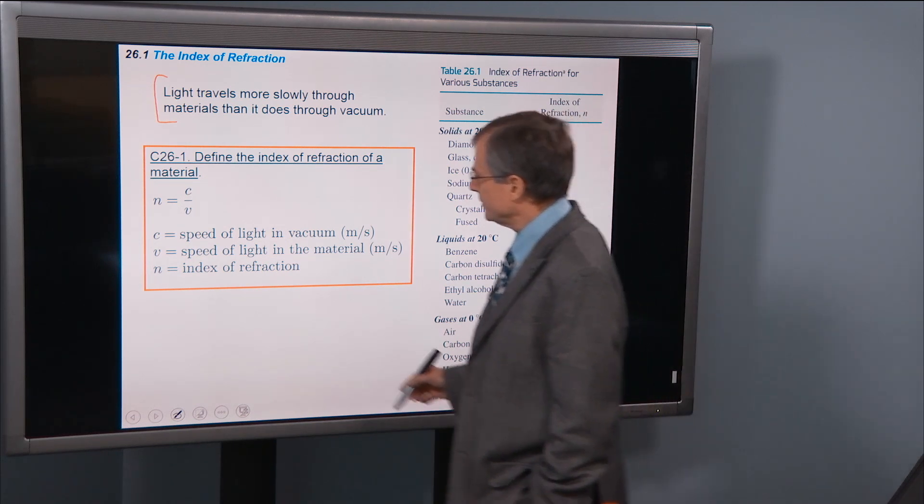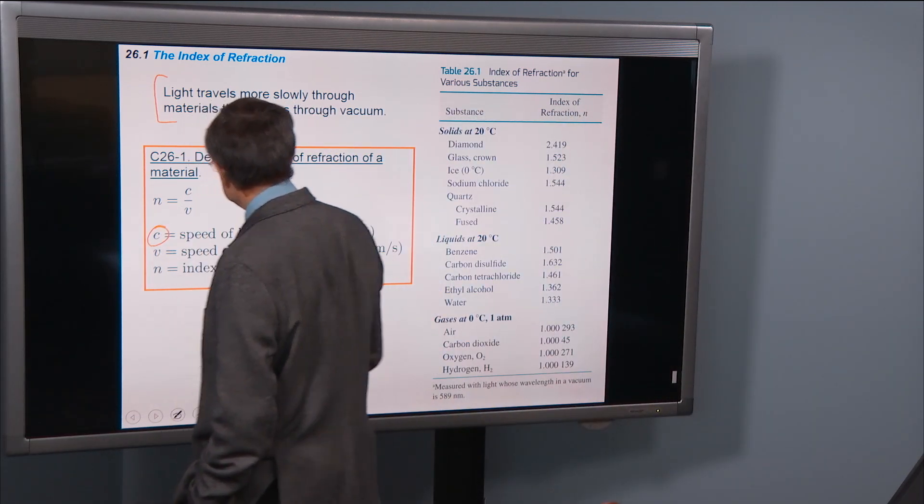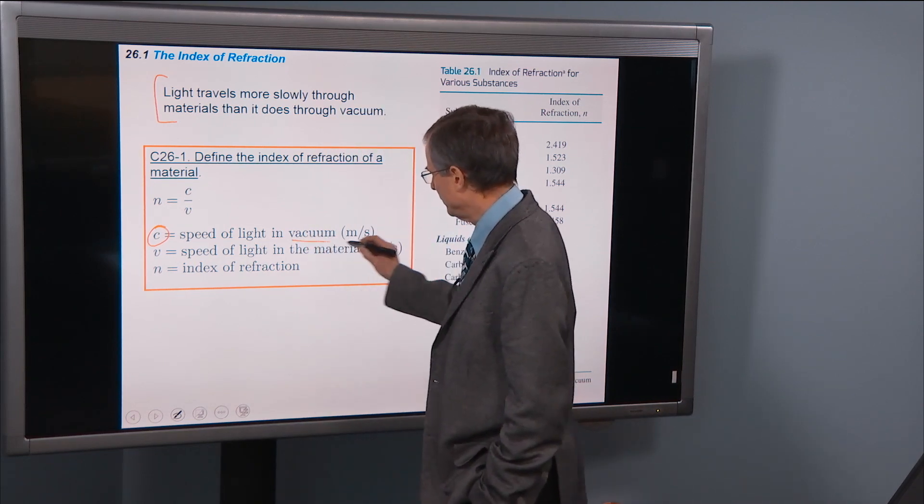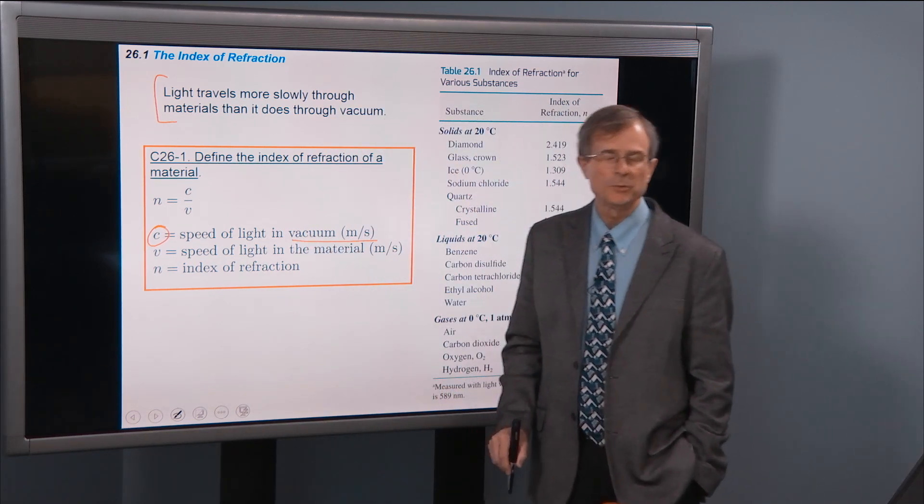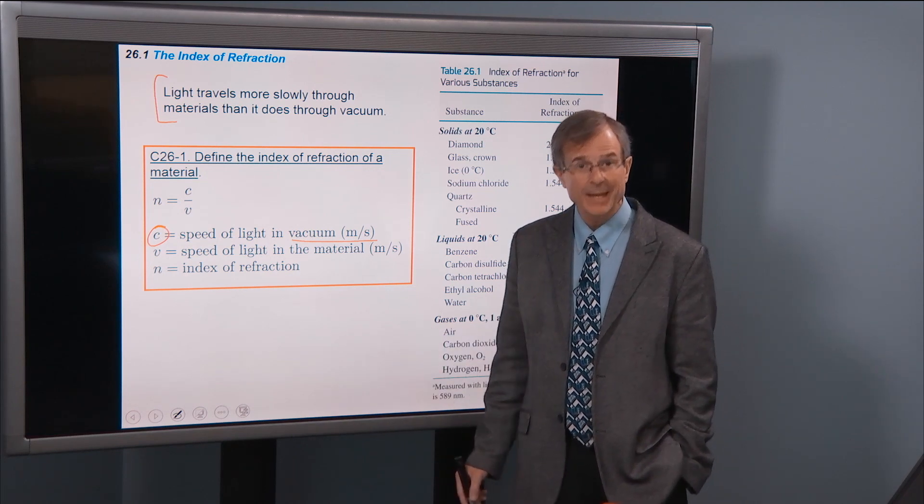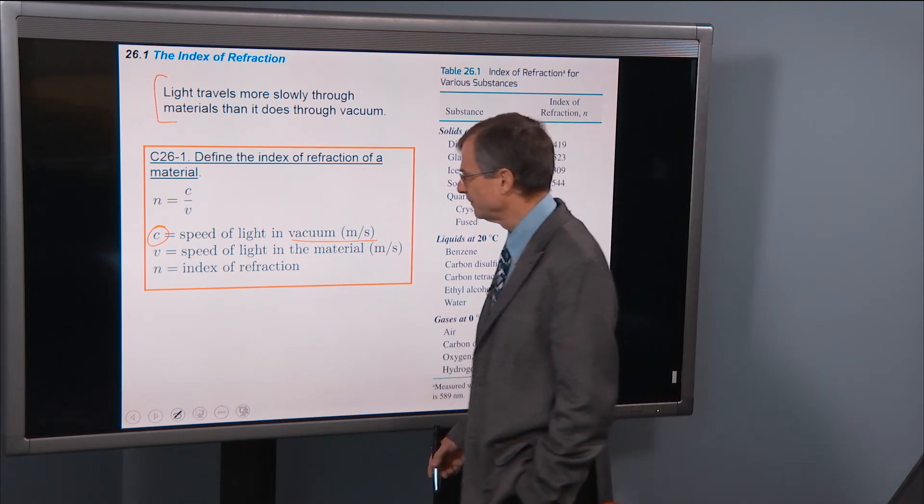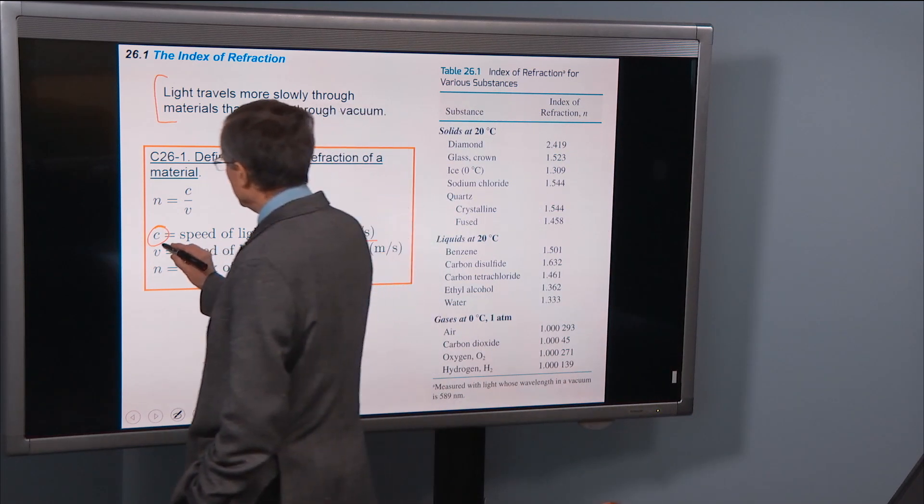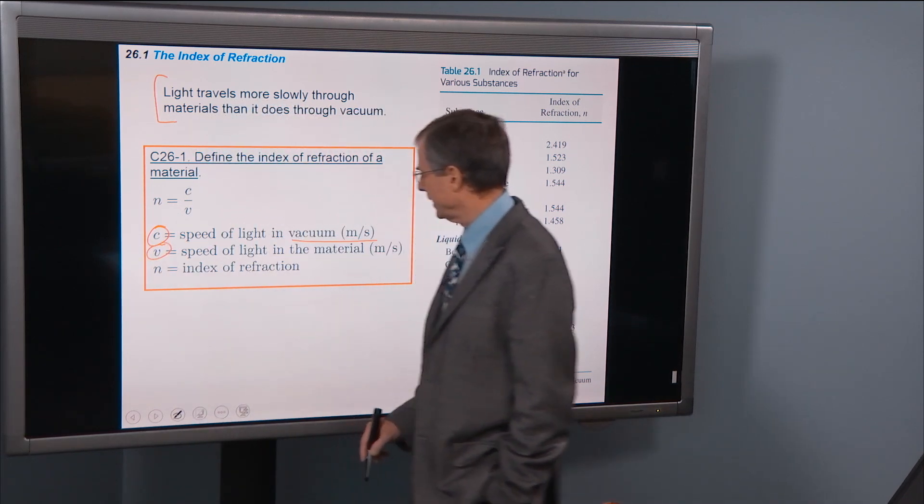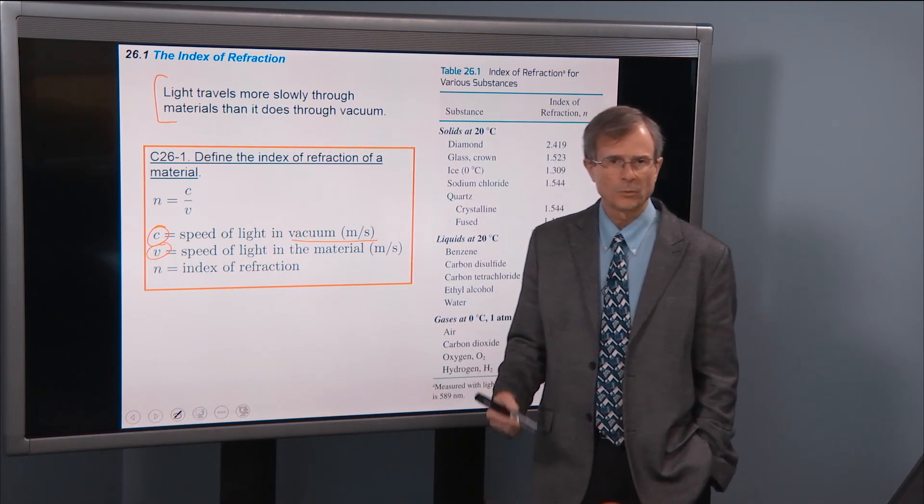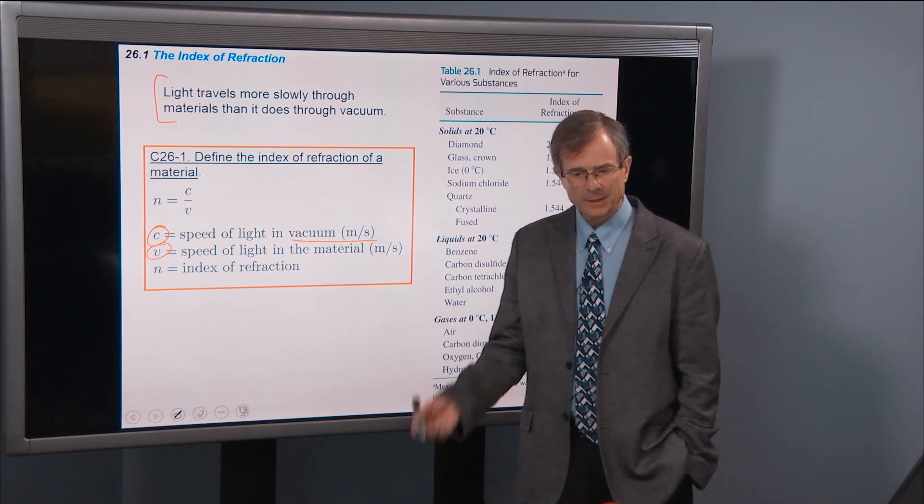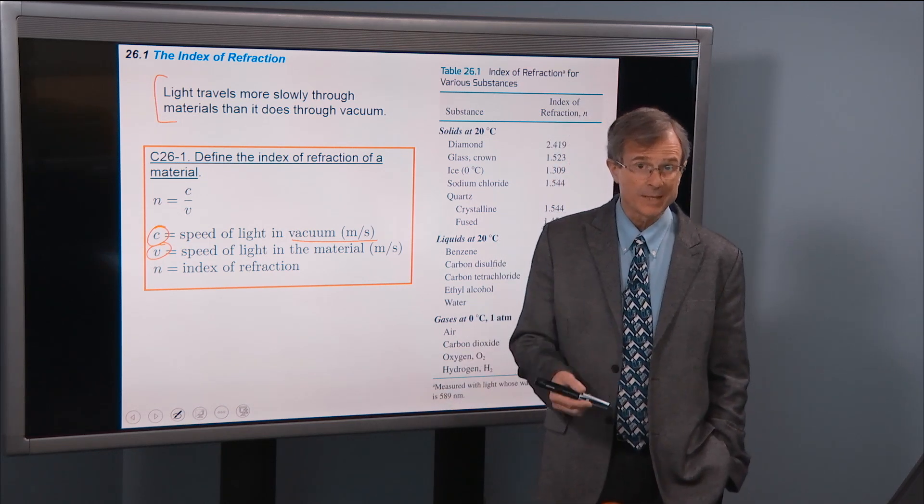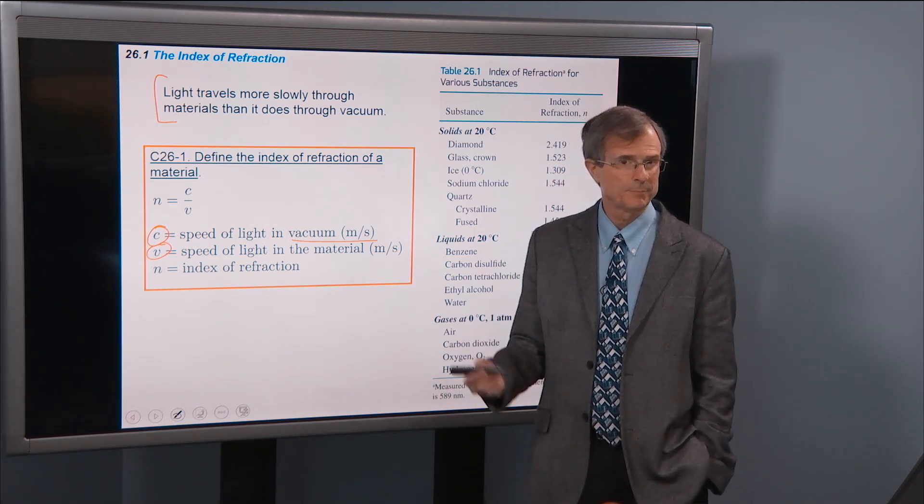So if c is the speed of light in vacuum, measured in meters per second, in fact you know what that number is. It's 3 times 10 to the 8 meters per second. And if v is the speed of light in the material, say water or glass, it's not going to be 3 times 10 to the 8, it's going to be less, say 2 times 10 to the 8.